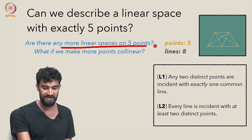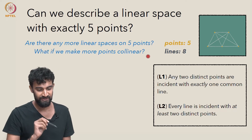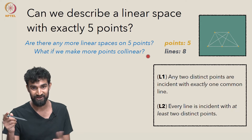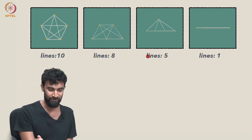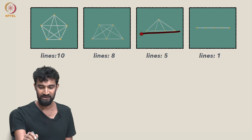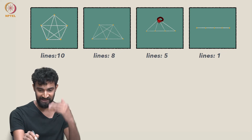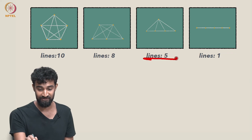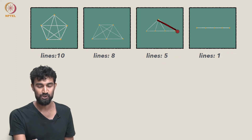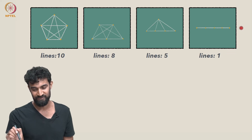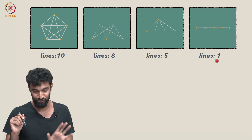Are there any more linear spaces on five points? What if we make more points collinear? We can make four points collinear — those four share one line, and the one remaining point gives four more lines for a total of five lines. Or we can make all five points collinear, giving just a single line — a very simple linear space.